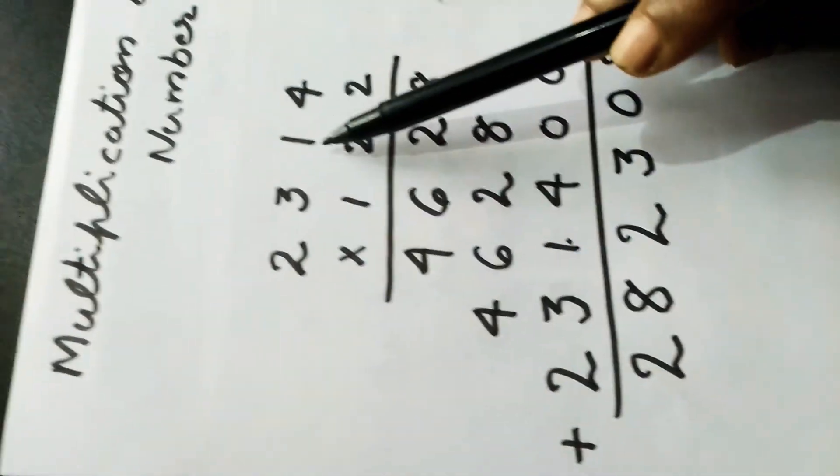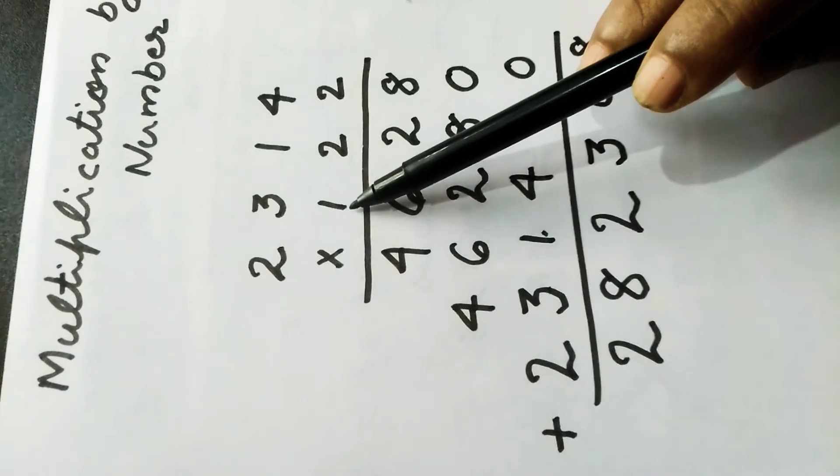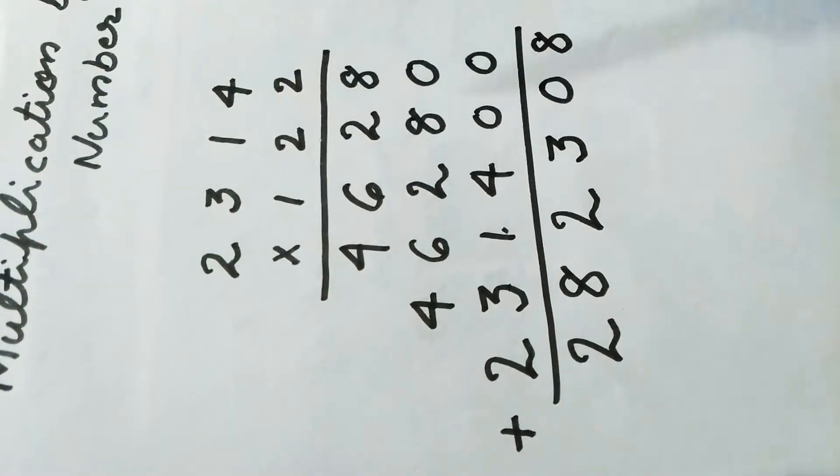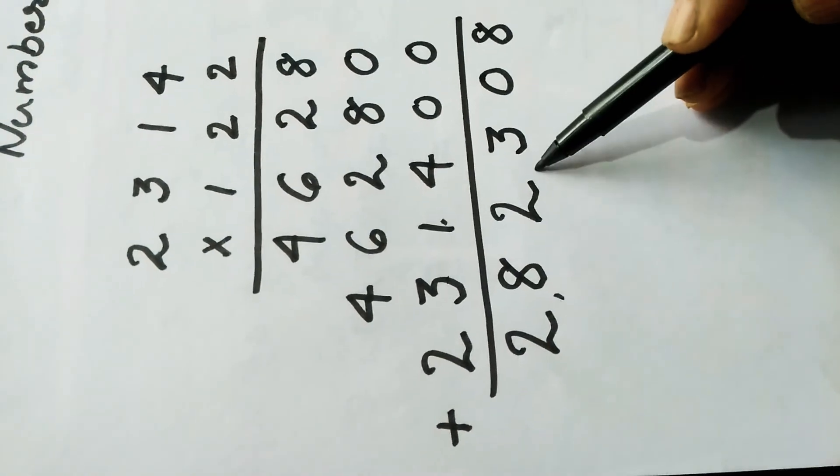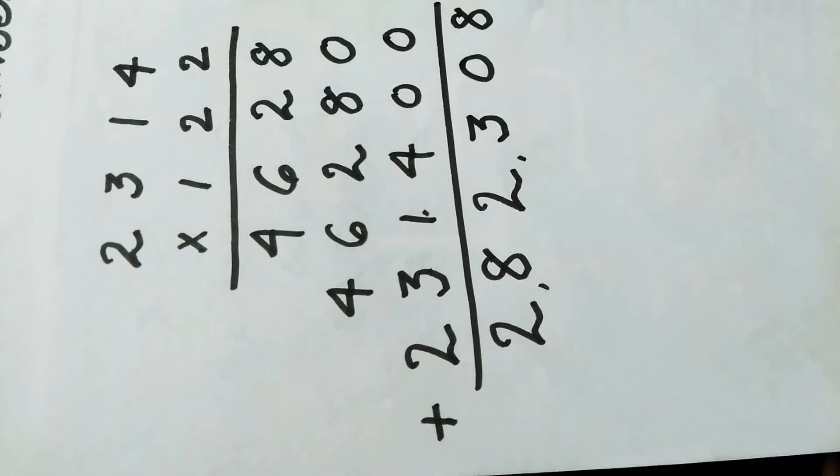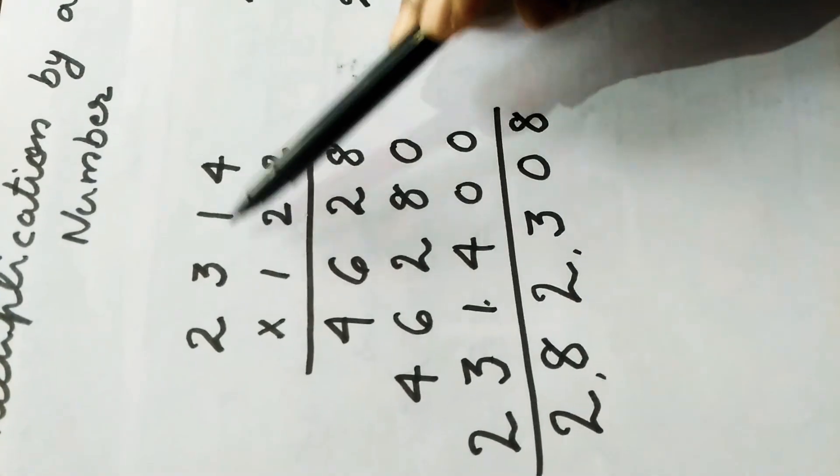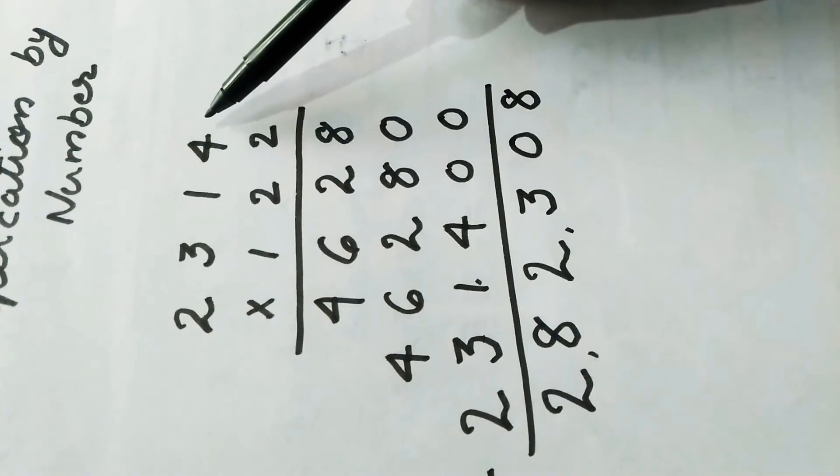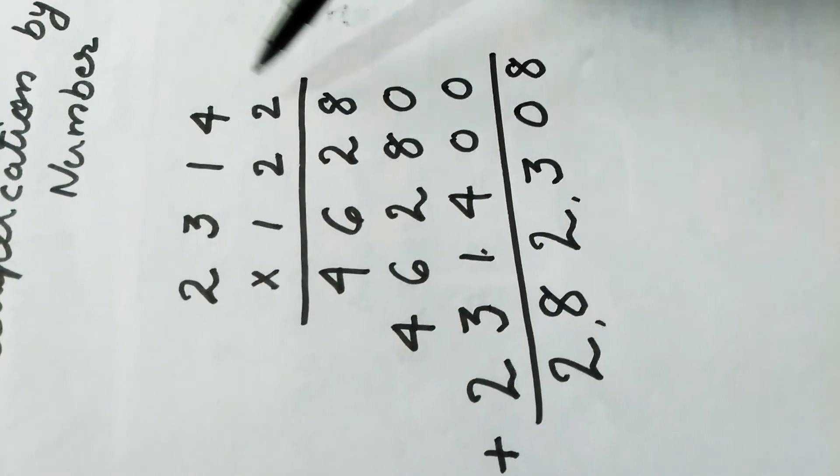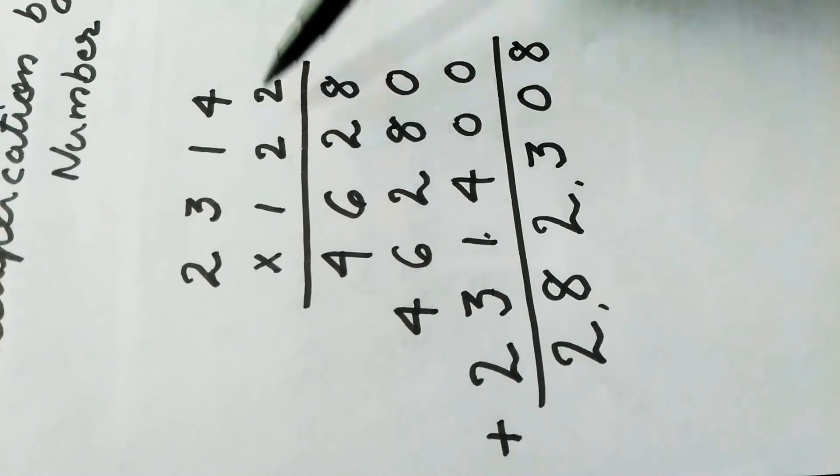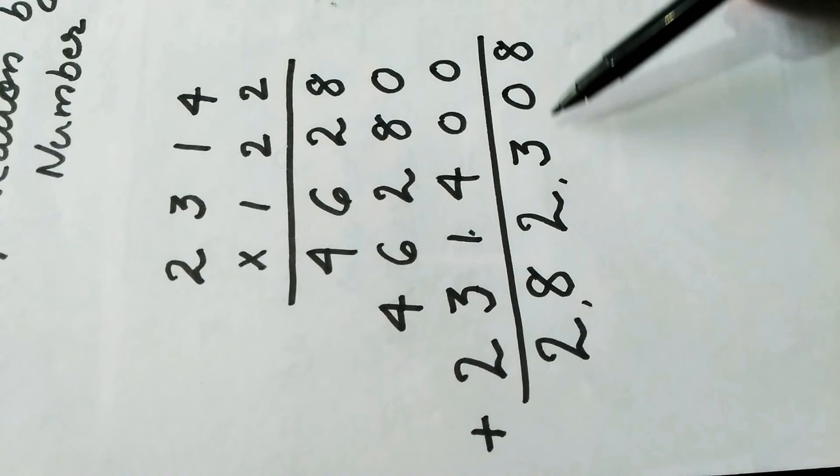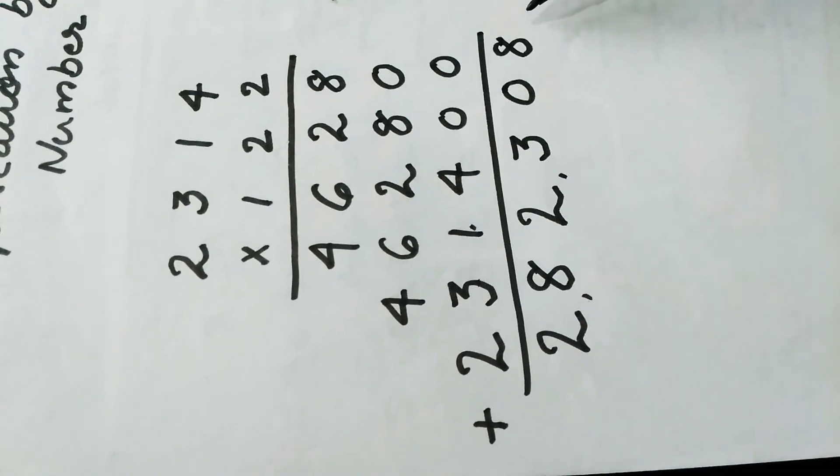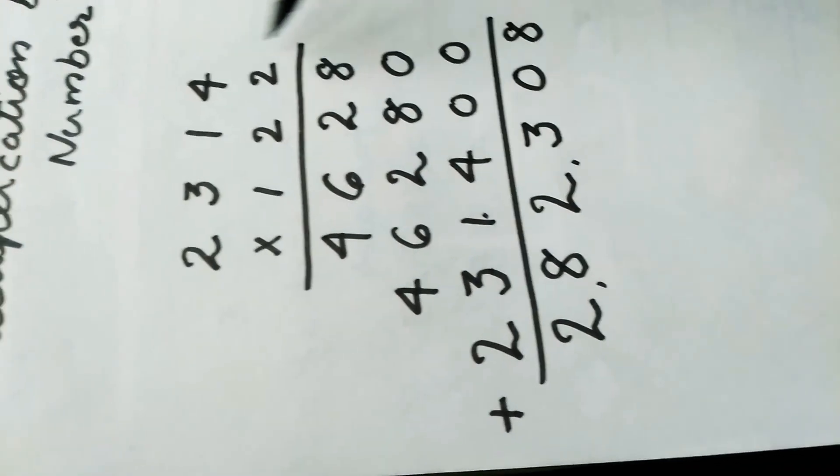Then 2,314 multiplied by 122 we get 2,082,308. 2,314 is called the multiplicand and 122 is called the multiplier, and 2,082,308 is called the product of these two numbers.